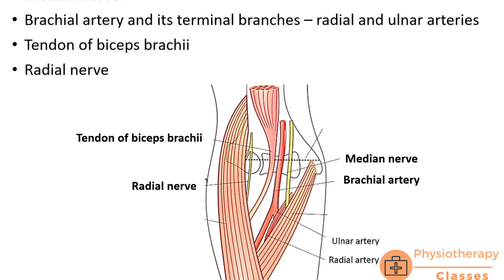The contents of cubital fossa, from medial to lateral, are: the median nerve (most medial), next is the brachial artery which divides into the ulnar artery and the radial artery, third is the tendon of biceps brachii, and fourth and most lateral is the radial nerve, which divides into a superficial and a deep branch.